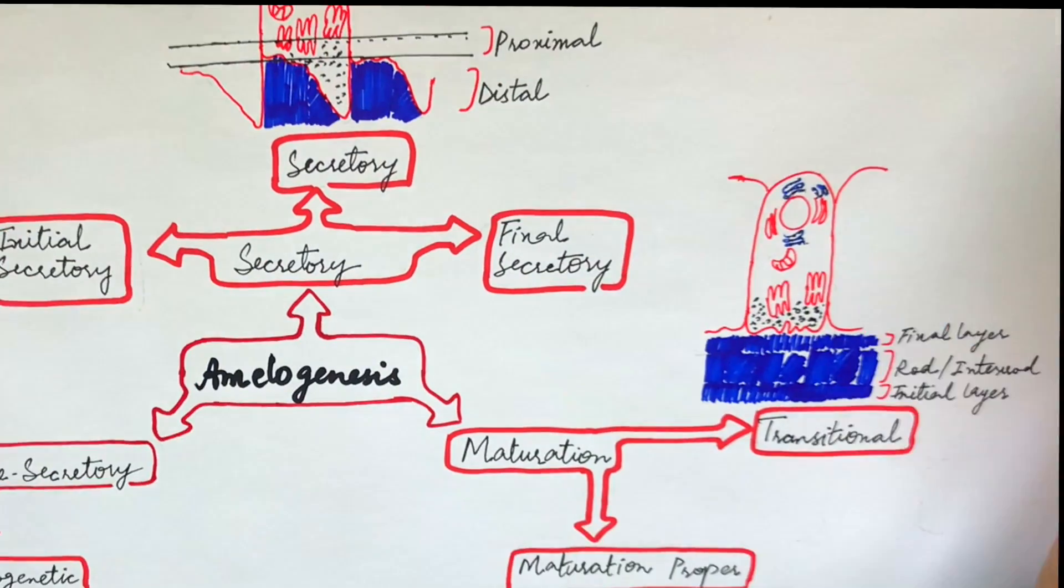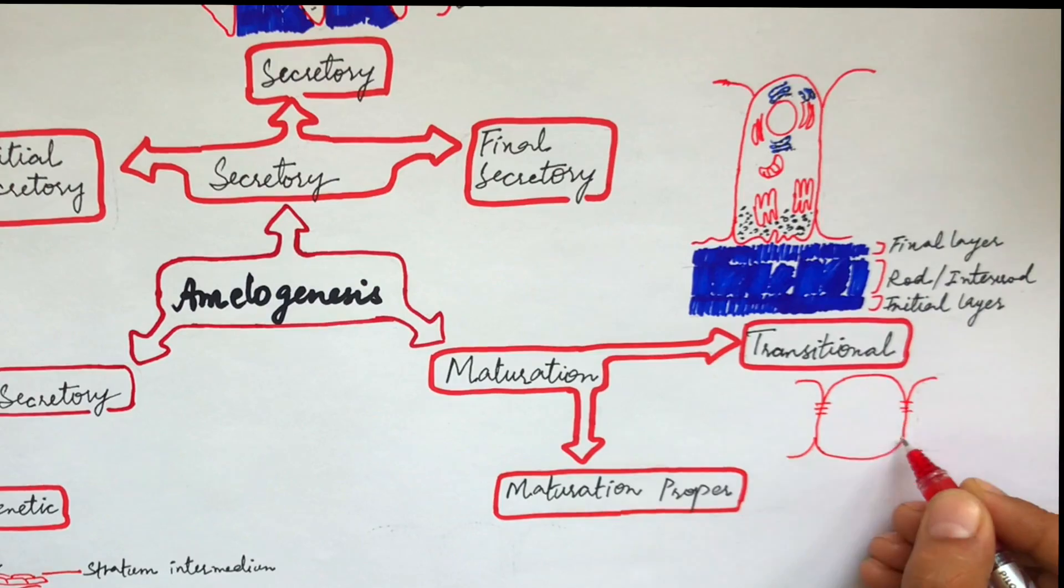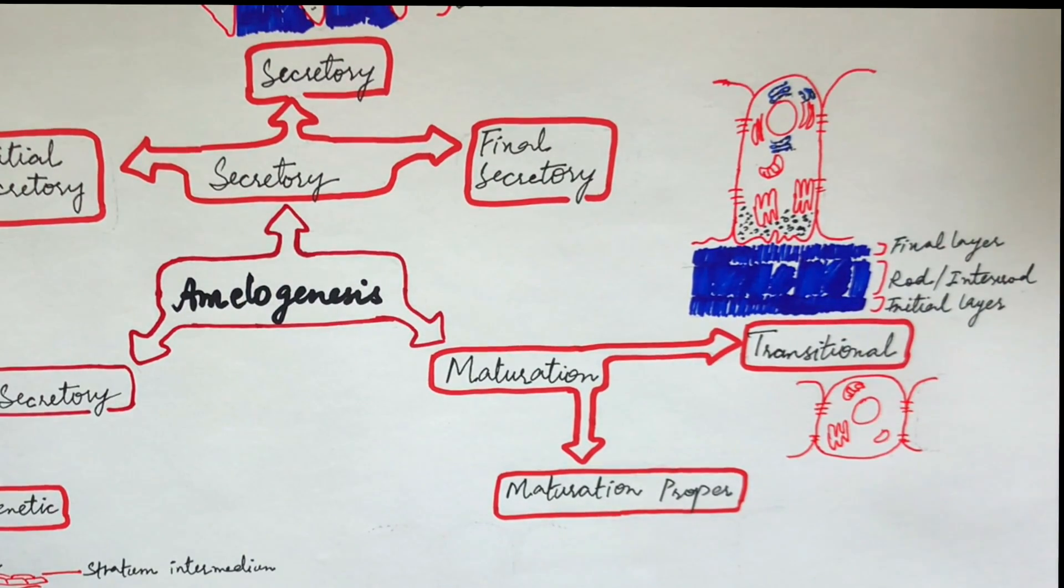In the transitional phase of the maturation stage, the ameloblasts are reduced in height and volume, and 25% of ameloblasts will undergo apoptosis during this stage.